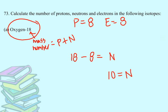Protons are 8, electrons are 8—they should always be the same. And then the number of neutrons are 10.